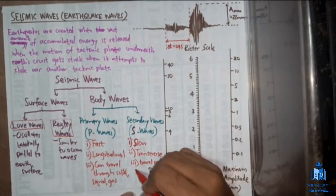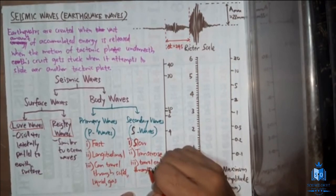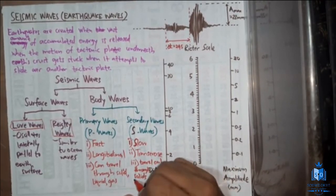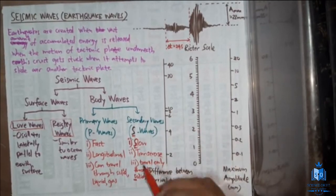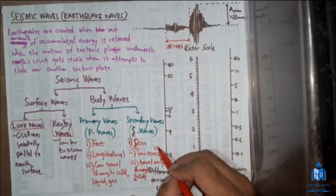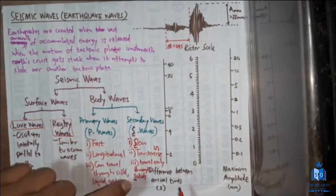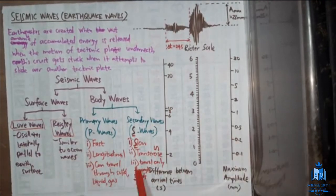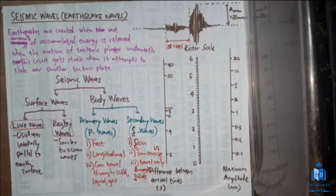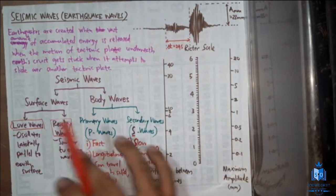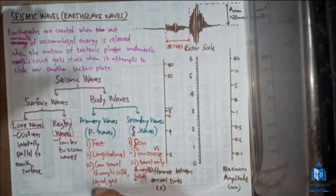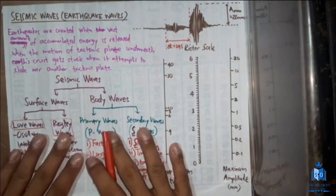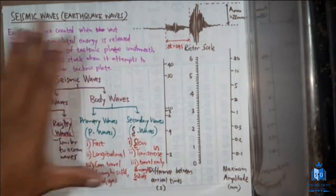Secondary waves can travel only through solids. A useful mnemonic: S waves are Slow, Transverse, and travel only through Solids — all starting with S. P waves are the opposite: faster, longitudinal, and can travel through all media. These properties are very important as exam questions are based on them.